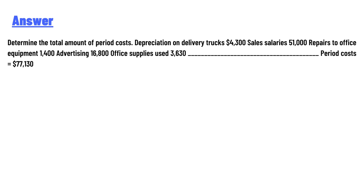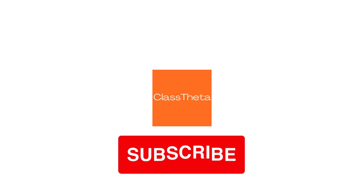The period costs are: depreciation on delivery truck $4,300; sales salaries $51,000; repair to office equipment $1,400; advertising $16,800; office supplies used $3,630. Total period costs: $77,130.